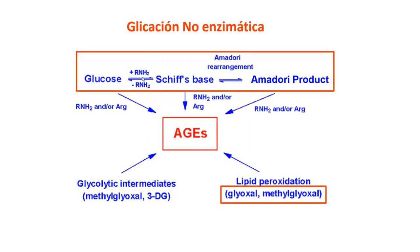Free amine groups in biomolecules are targets of non-enzymatic glycation, in which the carbonyl group of a reducing sugar like glucose reacts with primary amine groups to initially form an unstable Schiff base, which then undergoes rearrangements to form a more stable Amadori product. This product undergoes further reactions leading to highly reactive alpha-dicarbonyl compounds such as glyoxal and methylglyoxal, which play an important role in the formation of advanced glycation end-products such as carboxymethyl compounds.